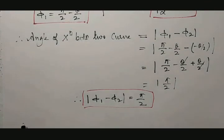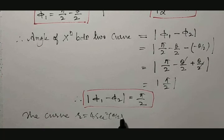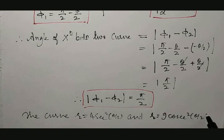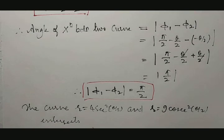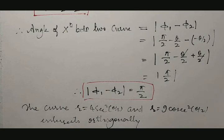Therefore, the pair of curves r = 4 sec²(θ/2) and r = 9 cosec²(θ/2) intersect orthogonally. The two curves intersect orthogonally. Thank you.